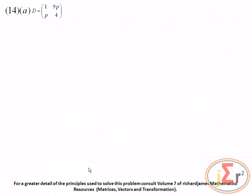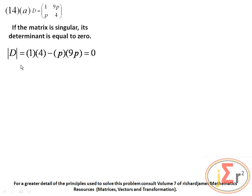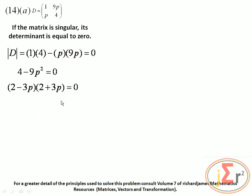We have a matrix D and are told it is singular, so we need to determine the values of P. If a matrix is singular, its determinant equals zero. The determinant is 1 times 4 minus 9P times P, giving 4 minus 9P squared equals 0. This is the difference of two squares, and solving gives P equals plus or minus two-thirds.